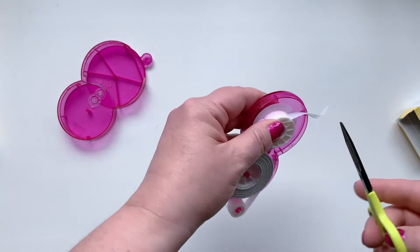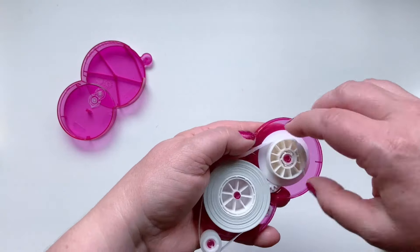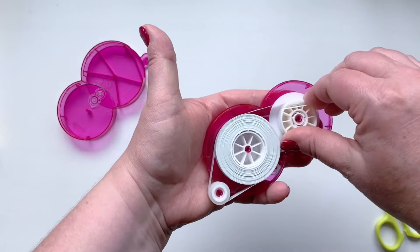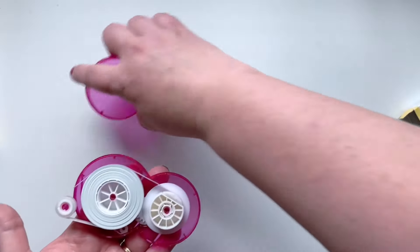Take some scissors and remove the excess tail if you have a lot. Then roll the back wheel clockwise to tighten the tape on the inside of the cartridge.